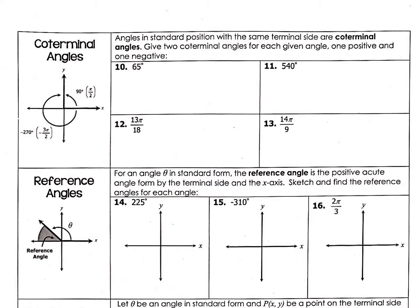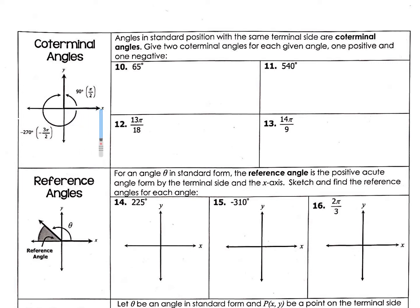A coterminal angle just means that they are angles in standard position, meaning that the initial side of that angle starts on the right side of the x-axis, the positive side of the x-axis. Angles in standard position with the same terminal side are coterminal angles.